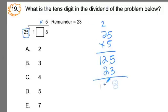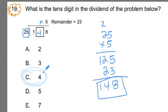So 148 is your dividend that when you divide it by 25, 25 goes into 148 five times with 23 remaining. And you could check that, or you could just do this method here to get to the 148. And the digit in the tens place, the tens place is the 4 or 40, but the digit itself would be the 4. So the answer here is C.